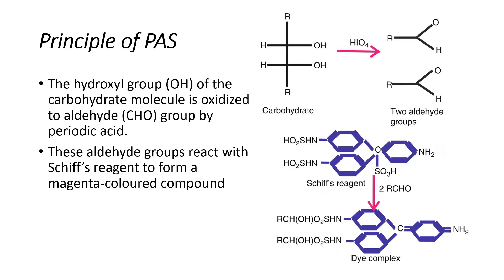Principle of PAS: The hydroxyl groups of the carbohydrate molecule are oxidized to aldehyde groups by periodic acid. These aldehyde groups react with Schiff reagent to form a magenta-colored compound.